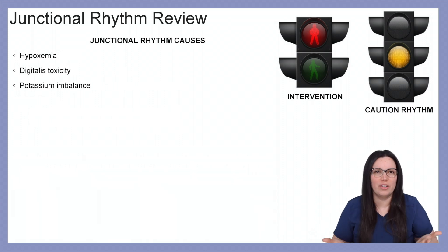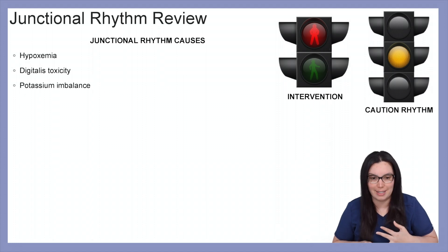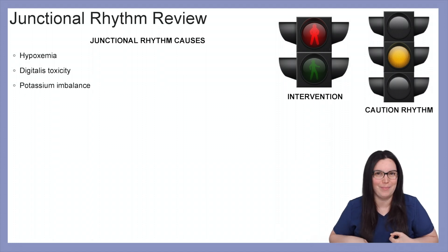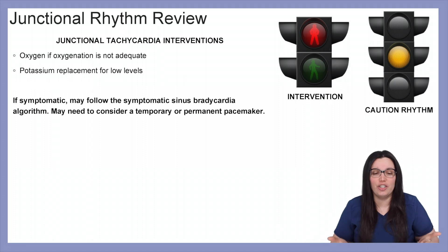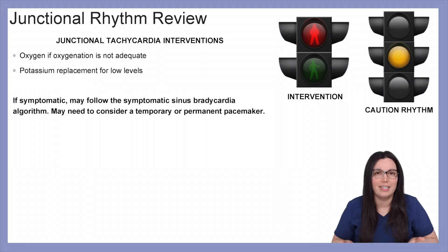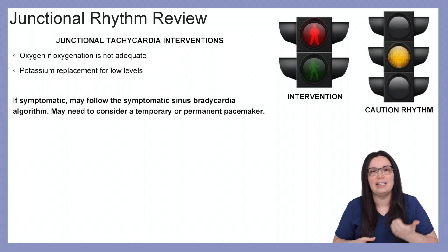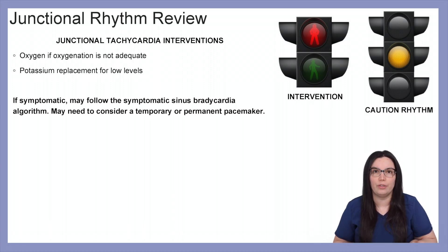What are some causes of junctional rhythms? It could be hypoxemia, digitalis toxicity, or a potassium imbalance. Intervention-wise, we're going to provide oxygen if oxygenation is inadequate — if it's less than 94% — and we can also provide potassium replacements if levels are low.